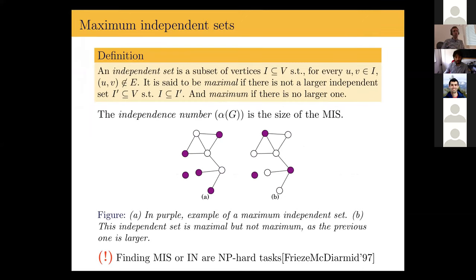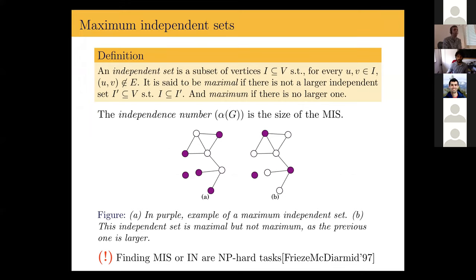I will talk about the problem of maximum independent sets in the context of random graphs. First, I will introduce the notion of independent sets. Given a graph G, an independent set is a subset of vertices such that no pair of vertices is neighbor to each other. In this picture, I have two copies of the same graph and in purple, two different independent sets for that graph.